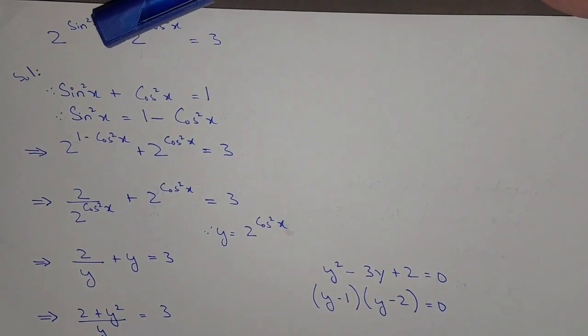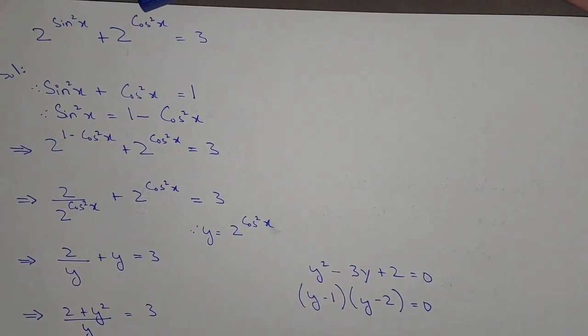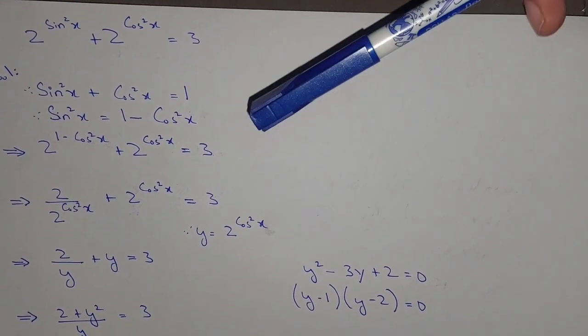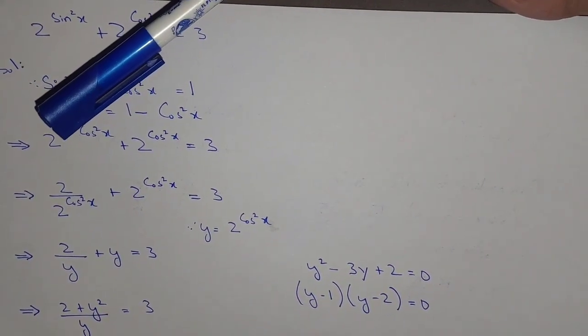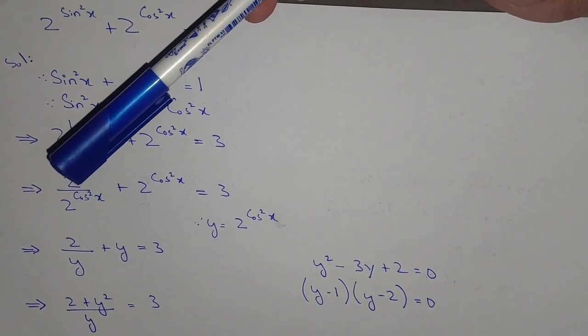We have 2^(1 - cos²x) + 2^(cos²x) = 3. Now, 2^(1 - cos²x) can be written as 2 / 2^(cos²x), because when the bases are the same we can subtract the powers.